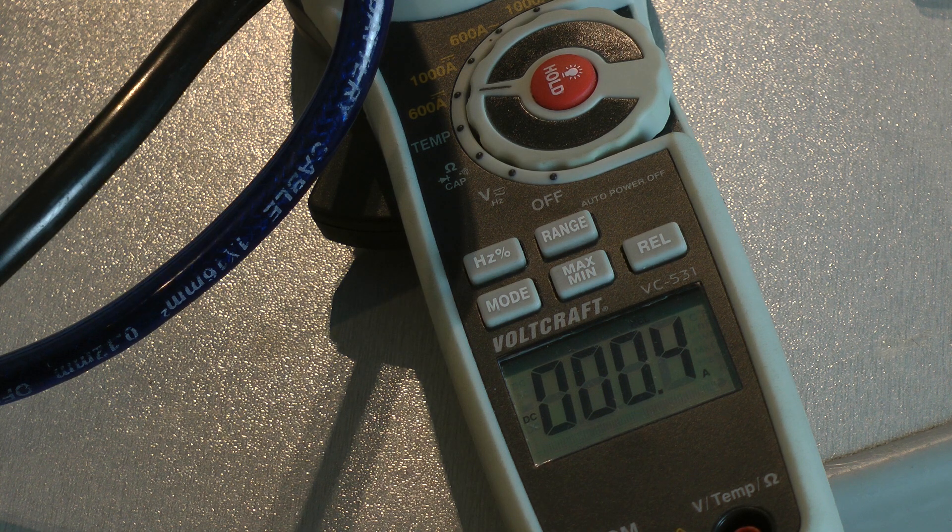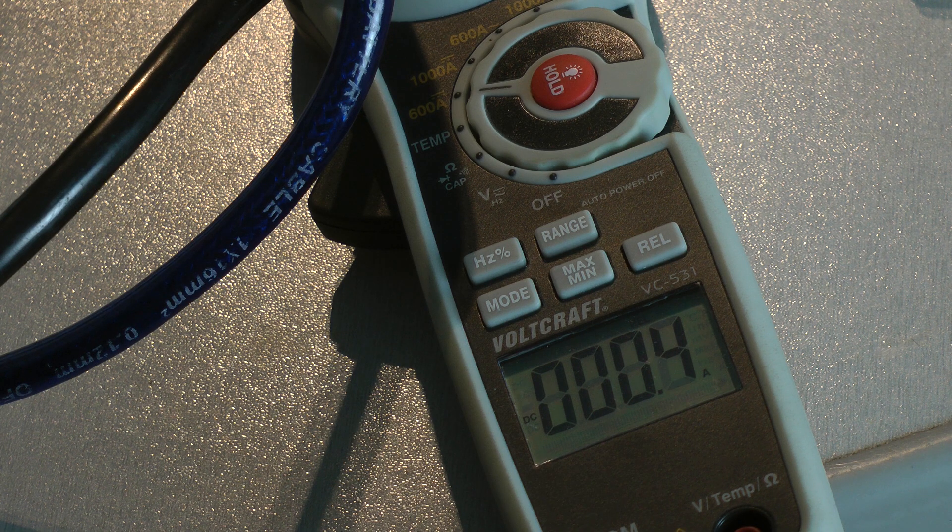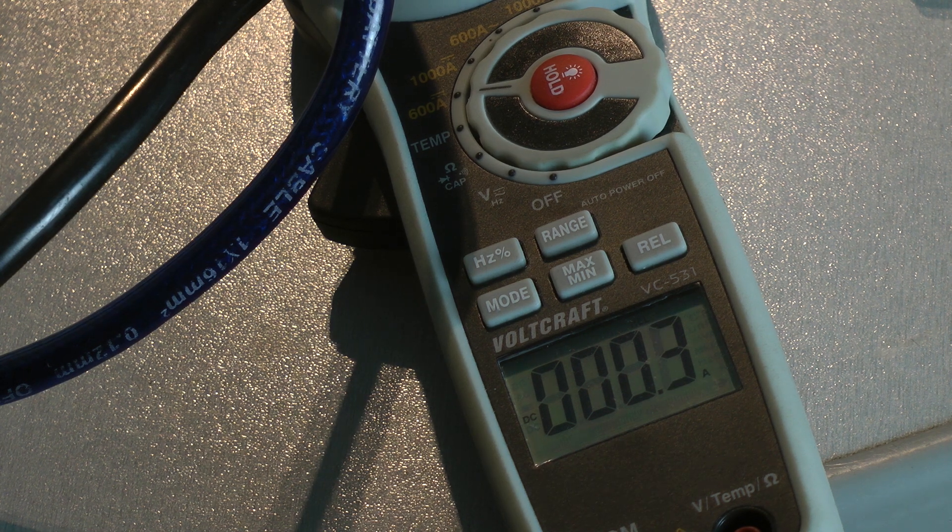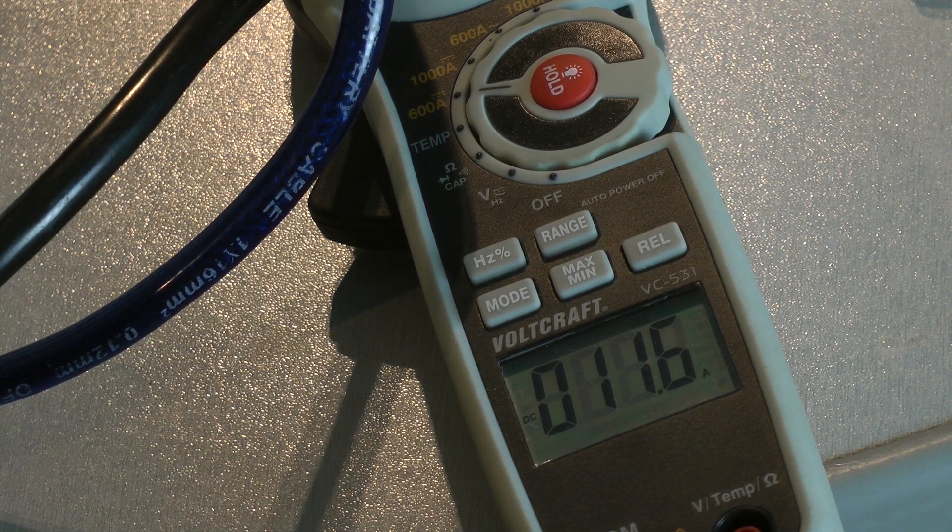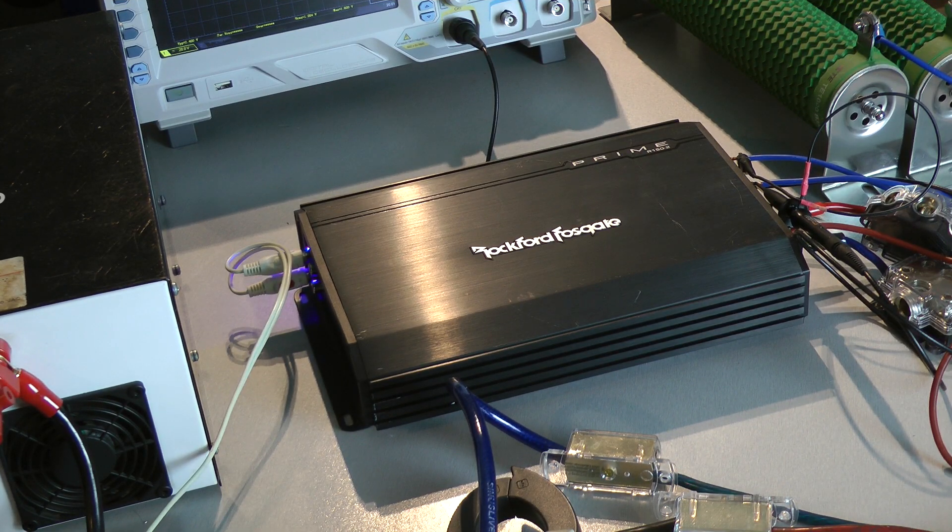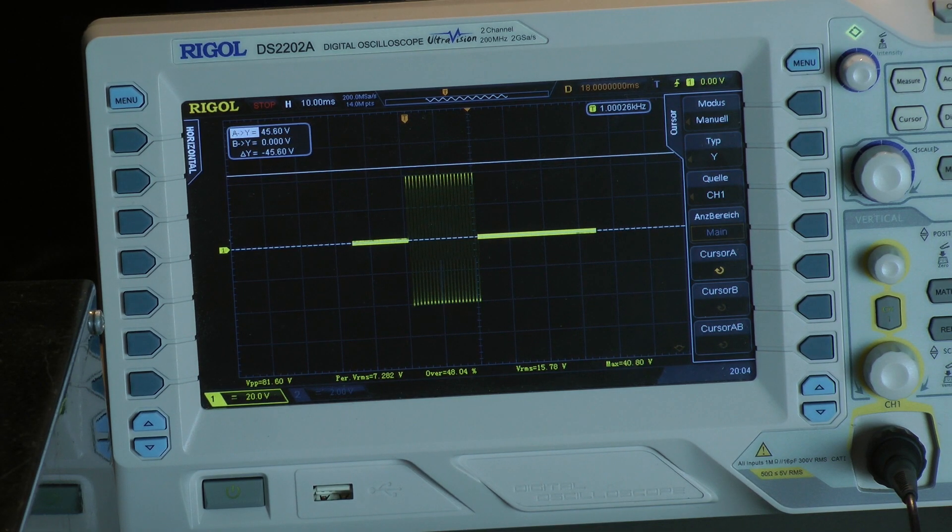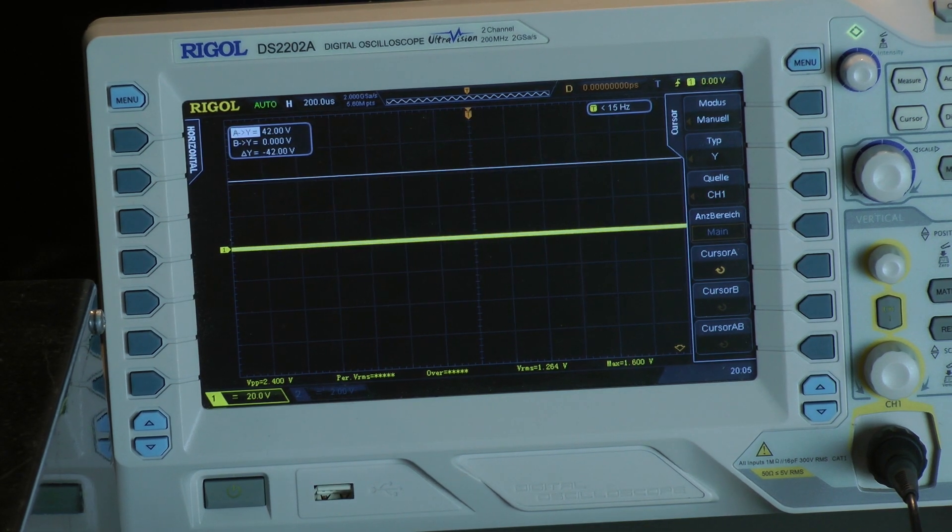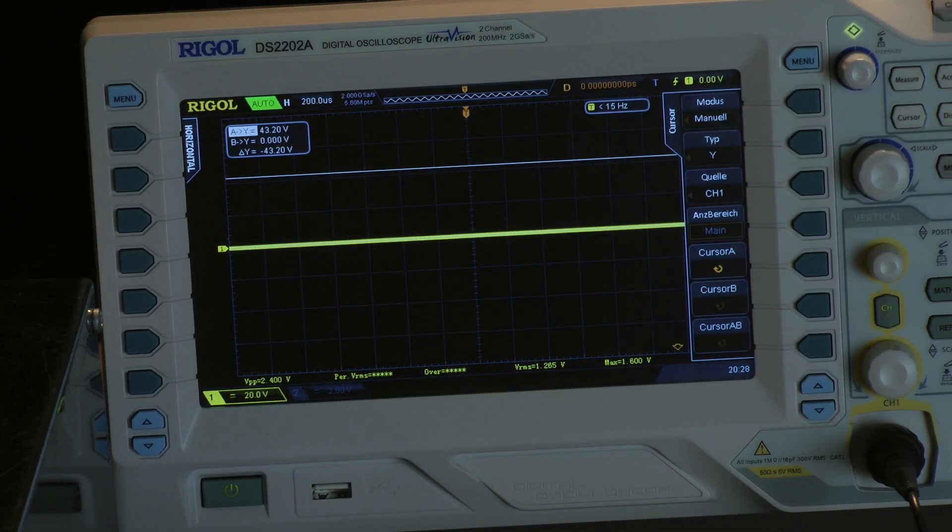Let's have a look at the efficiency. The idle current is very low, I measured around 0.36 amps, jumping to 0.4. With 1 kilohertz continuous power, we have 11.6 amps. The Prime 152 has an efficiency of 69 percent. There's no dynamic headroom, so I skip that test.